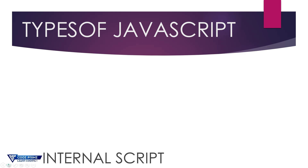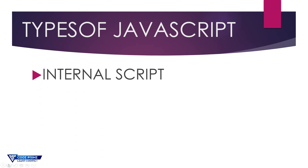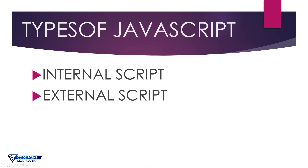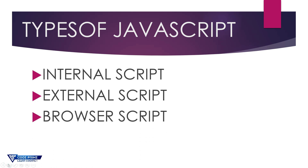For the types of JavaScript, the first one is internal script — you can write JavaScript internally anywhere on the page. Secondly, there is external script — you can write your JavaScript in an external file. And the third one is browser script — you can write JavaScript directly in your browser. We will show a practical demo of all three steps.